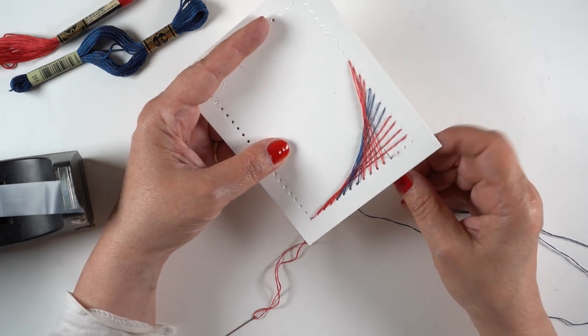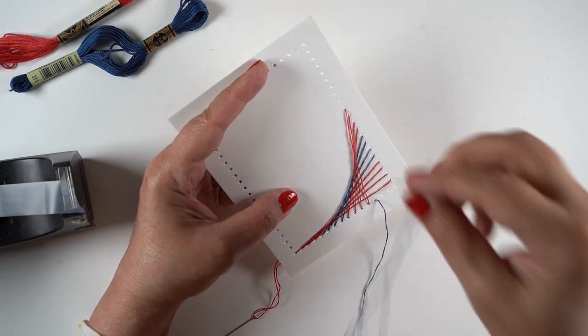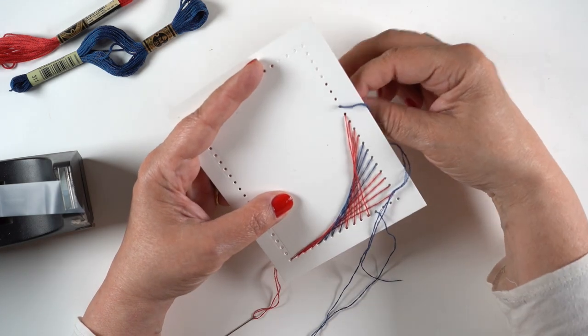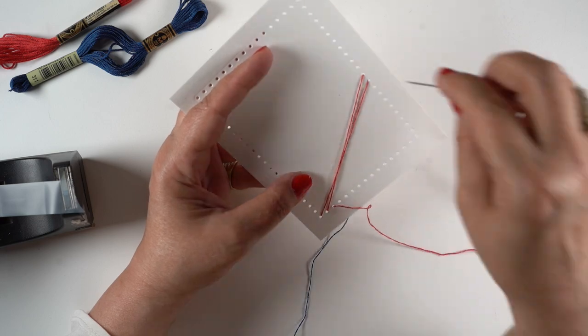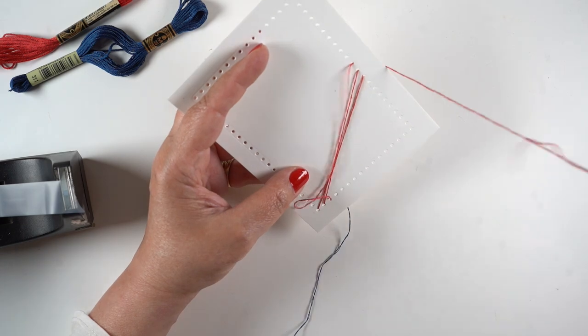But what you can do with these, which is great, is you can practice. So here I'm just testing out to see if I start in this particular spot, where will that land me? So I just undid it. There were no knots in anything, so I just untied it all.